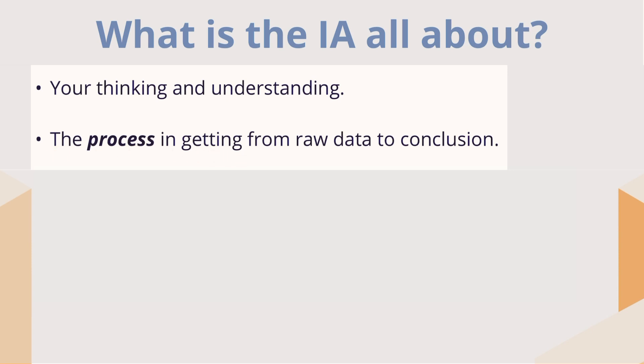The IA is about the process of getting from the raw data to the conclusion. So however you gathered your data — maybe you've plotted points from a video, maybe you've gotten secondary data from a website — how did you get from that data to your final conclusion? It's that process that we're really looking at. And within that process is the application of mathematics, in this case most likely calculus. How did you apply calculus to that raw data, develop it, and come to your end result?